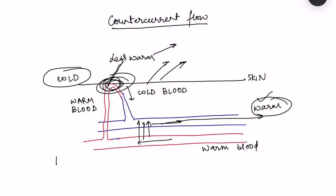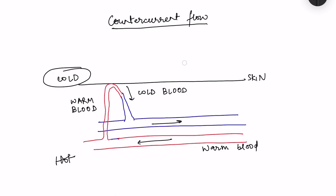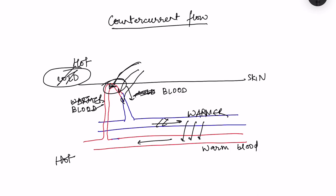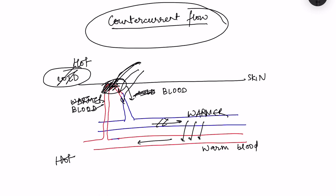In a hot environment, the opposite happens. Much warmer blood reaches the skin surface, but heat gain from the environment will be less because the temperature gradient between the environment and the blood is reduced. That is how counter-current flow helps in heat conservation in cold environments and reduces heat gain in hot environments.